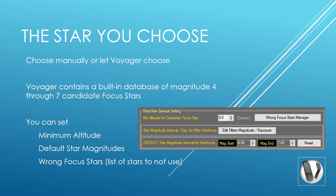Binning is another way to make the star appear brighter. You can choose a focus star manually or let Voyager choose. Voyager's built-in database of focus stars has stars between magnitude four and seven. In the autofocus setup panel under RoboStar General Settings, you can set the minimum altitude for your focus star — for example, if your sky is blocked below 30 degrees, set the minimum altitude to 30. There's also a wrong focus stars manager to explicitly exclude specific stars. Clicking 'edit filters magnitude and exposure' lets you manually set the magnitude range and exposure for each of your filters.